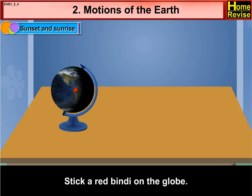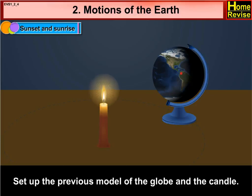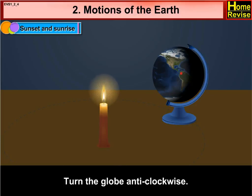Stick a red bindi on the globe. Set up the previous model of the globe and the candle. Turn the globe anti-clockwise.